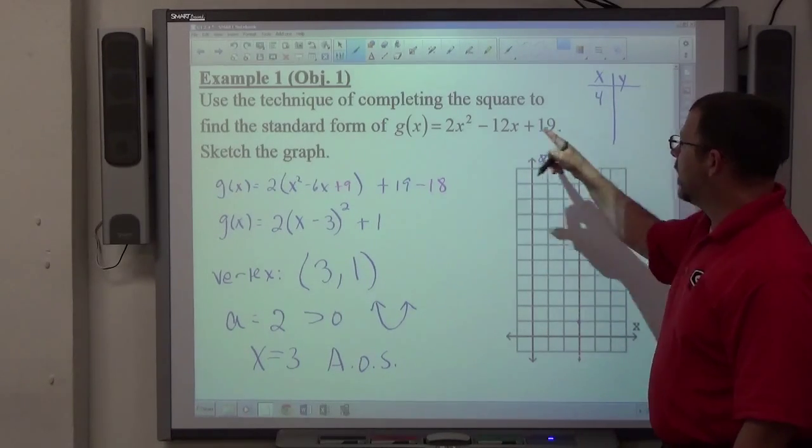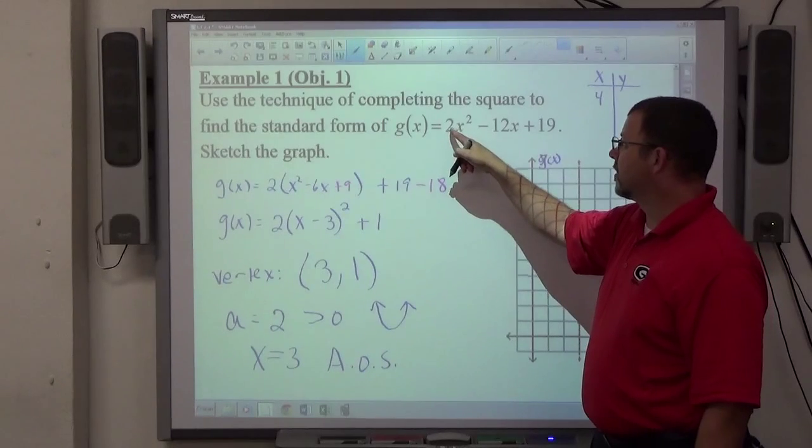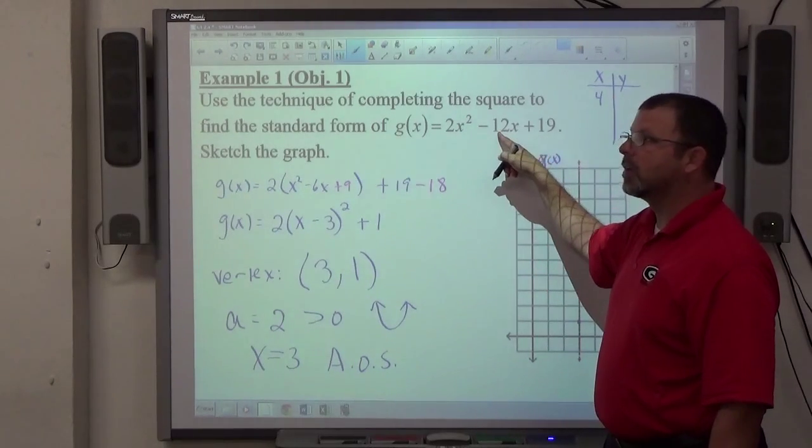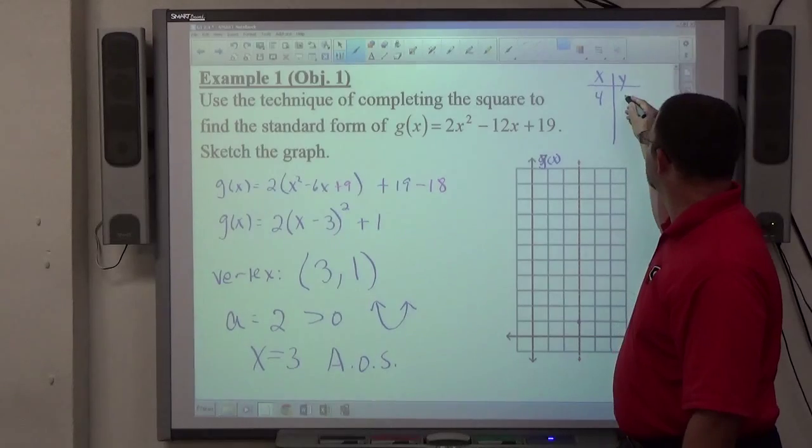So picking 4, which is close to that. Now I can go right here. 4 squared is 16 times 2 is 32. Minus 40 is negative 12. Plus 19 is 7.